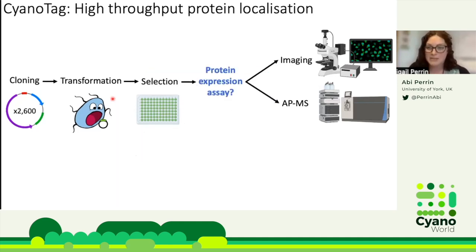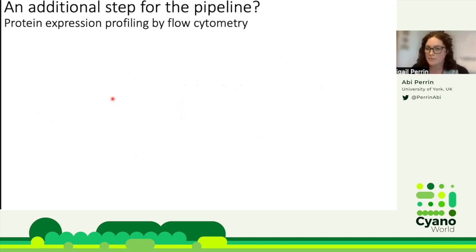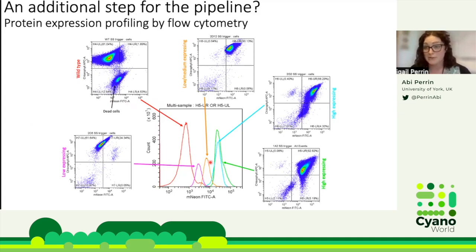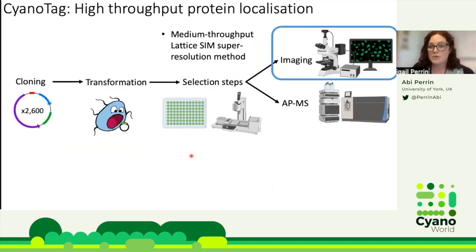I'm also working on adding an additional step to the pipeline so we can use these mutants to get an idea of protein abundance, using the fluorescence of the tagged protein as a proxy for its expression level. The most promising method seems to be flow cytometry. This preliminary data illustrates that we can detect even quite low levels of fluorescence in our mutants — the red peak shows mNeonGreen fluorescence from wild-type cells, while the purple line represents a strain expressing such low levels of fluorophore that it's very difficult to see under the microscope, yet we can still see clear separation by flow cytometry. This method should help us prioritize ideal lines for imaging and proteomic studies.